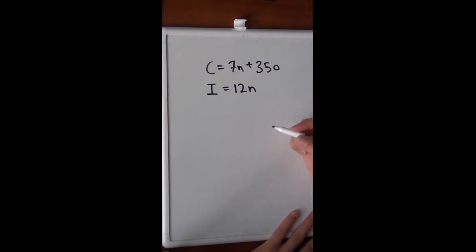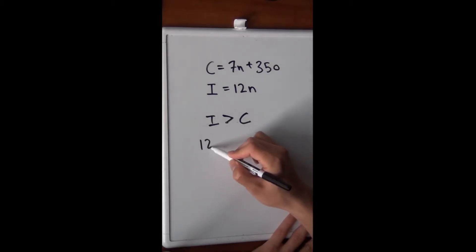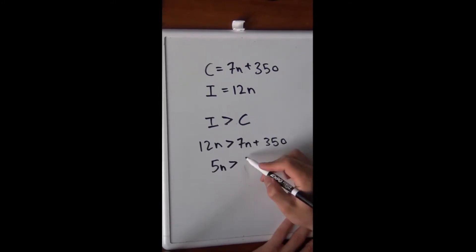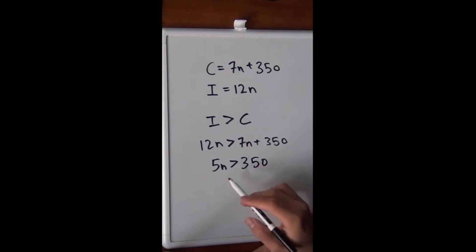So in order to make a profit, of course, we need our income to exceed our cost. Now, if we're going to do that, then we need to say 12n is greater than 7n plus 350. And we can simply solve for n to get our answer. So subtract 7 from both sides. Should be 350. And then divide by 5. And we get n is greater than 70. There's our answer, choice C.